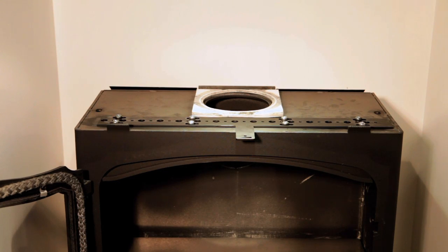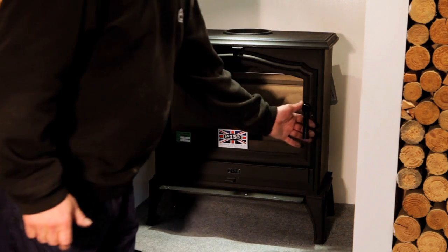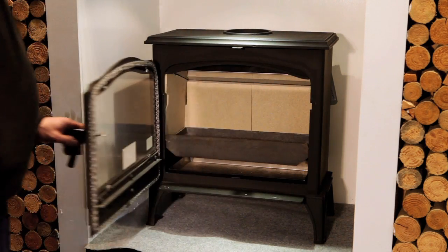Occasionally, the air controls will need to be adjusted if the slider becomes jammed. To adjust the air controls, you will need to remove the top of the stove.